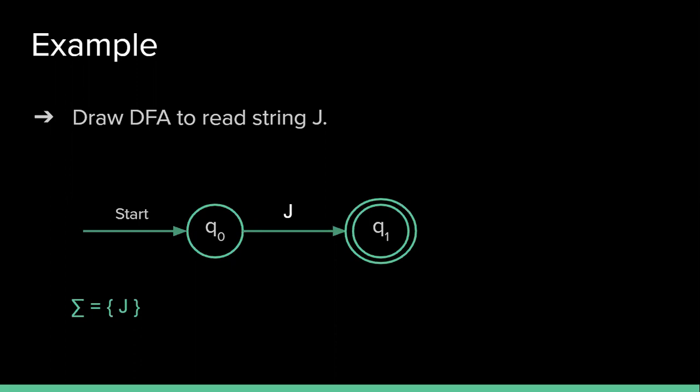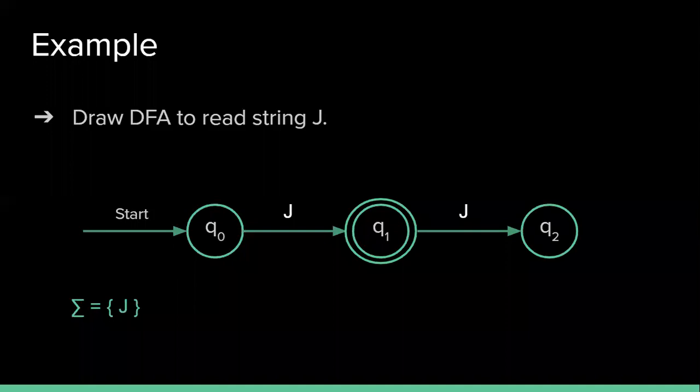Now from q1, where to show the transition for J? I cannot show the transition for J as a self loop to q1 because then it will accept more than one J. And as we have to read only single J, we will create a new state from q1 to read the J. That is, from q1 we will read J and reach to the state q2. And now for q2 we can show the J as a self loop.